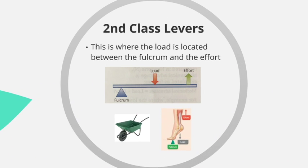Moving on to second class levers, where the load is located between the fulcrum and the effort — so the load is in the middle of the lever arm. In everyday terms a good example is the wheelbarrow: the fulcrum is where the axle on the wheel is, the load is the bucket container in the middle holding soil or whatever item you've got, and the effort is at the handles where you lift the weight to move the wheelbarrow.